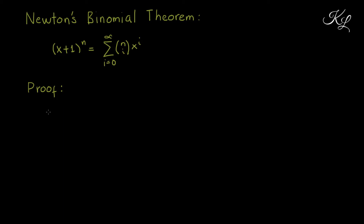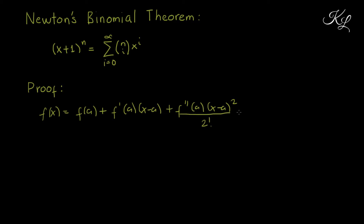In order to prove this theorem, let us first recall the Taylor series for a function. The most common form is: f(x) equals f(a) plus the first derivative of f at a times (x minus a), plus for the second derivative (x minus a)^2 over 2 factorial, and you can see the pattern: the i-th derivative of f at a times (x minus a)^i over i factorial, and it goes on and on.